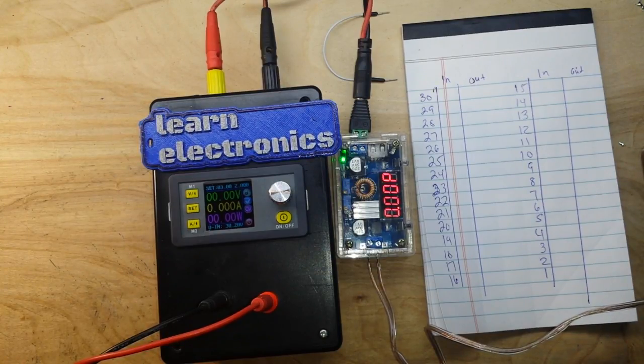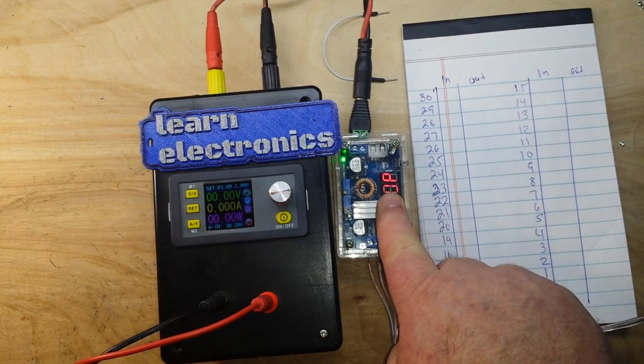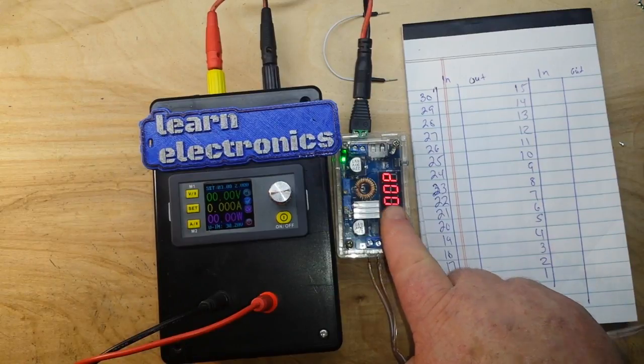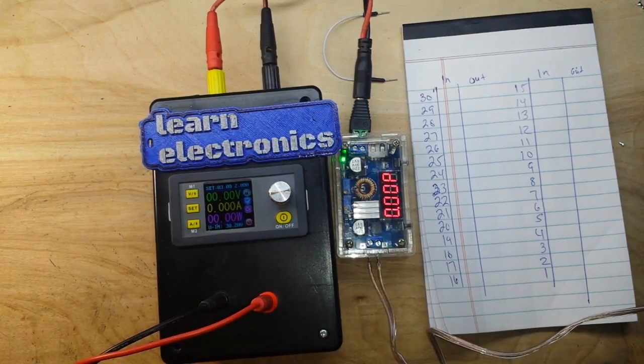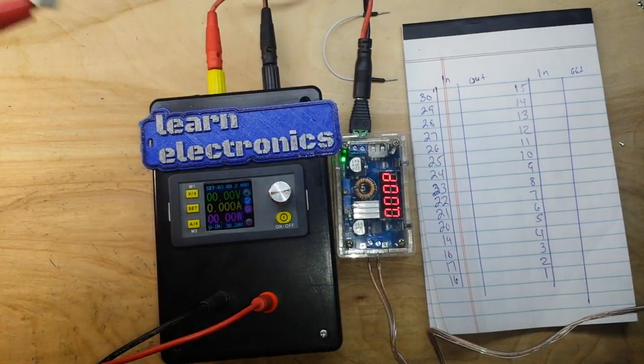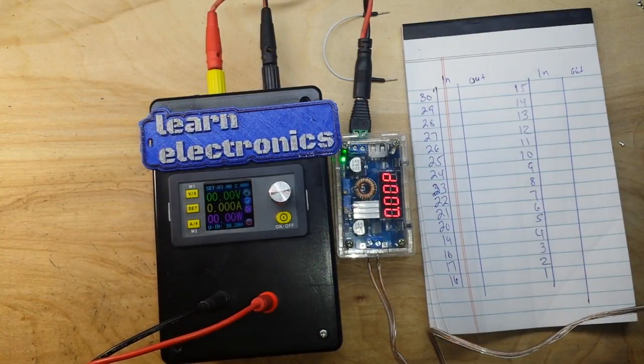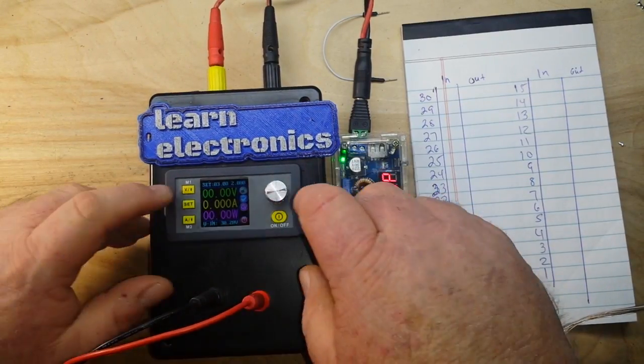So we're giving it 30 volts in, which is the maximum my benchtop power supply can output. This thing here is monitoring the power in, we can monitor the power out over here, we've got a load. We'll come down here, we'll set our voltage, start here at the bottom, one volt.